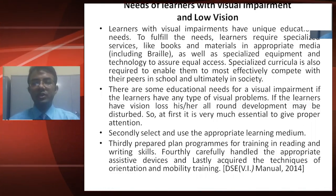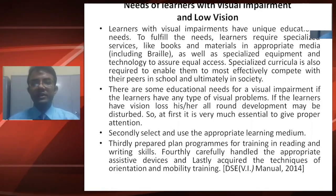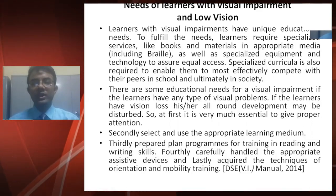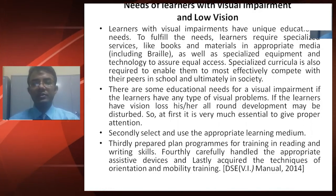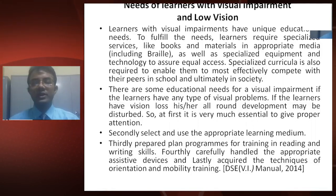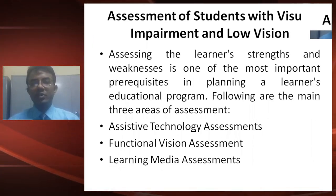There are specific educational needs for learners with vision loss. First, if a learner has vision loss, his or her all-round development may be disturbed, so it is essential to give proper attention. Second, selecting and using the appropriate learning medium is a very important task for the teacher. Third, prepare planned programs for training in reading and writing. Fourth, carefully handle the appropriate assistive devices. And lastly, acquire the techniques of orientation and mobility training.